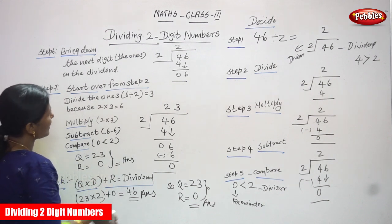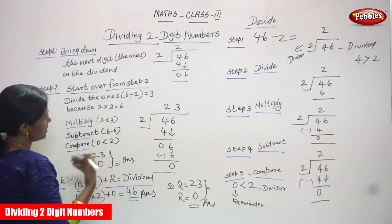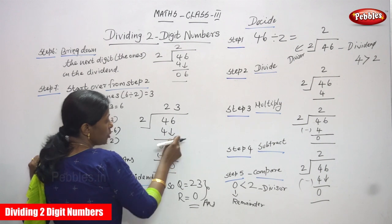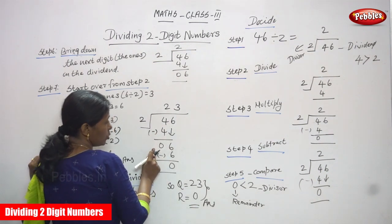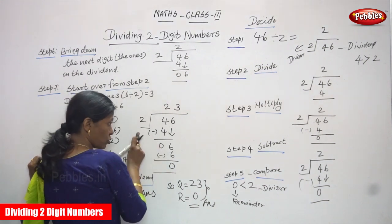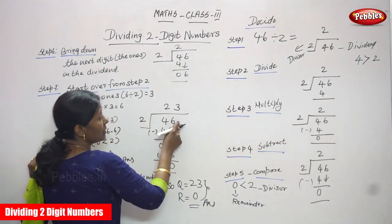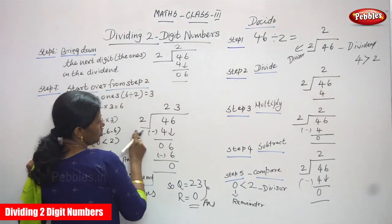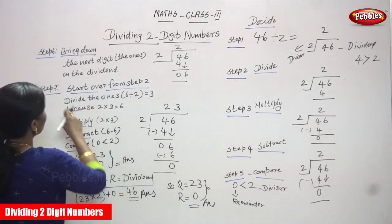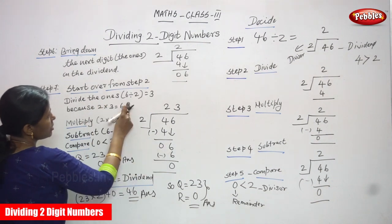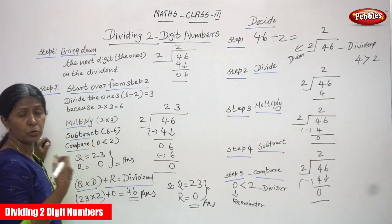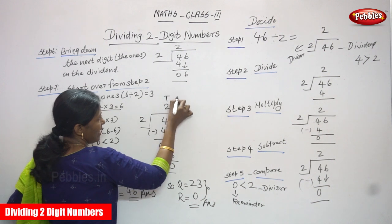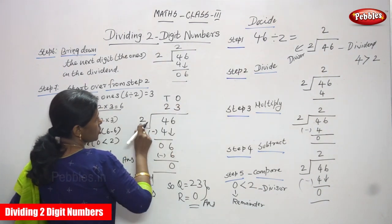Step 7: Start over from Step 2. Again, you have to repeat the process starting from Step 2 — divide the ones. You bring down the 6 ones. Now 6 is going to be divided by 2. Say the 2-times table: 2 ones are 2, 2 twos are 4, 2 threes are 6. So 2 into 3 is 6. Write 3 in the ones place of the quotient.